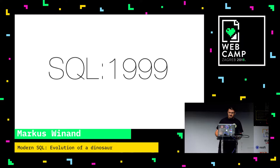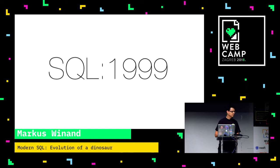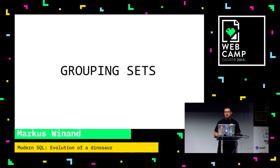Let me start with the first one — the first standard that came after SQL 92. That was SQL 99. The interesting thing about SQL 99 is that it kind of broke with the relational model. From SQL 99 on, SQL was not limited to the relational idea anymore. This is something you really need to understand — that's an important move in this standard. However, I just take one feature out of there because of time constraints.